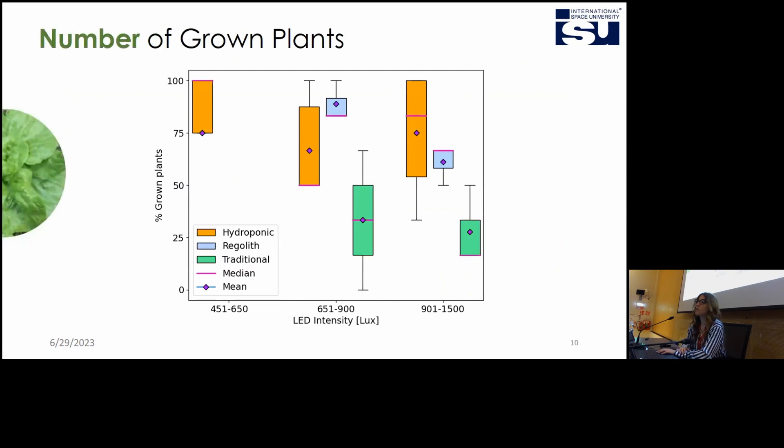But now if we want to compare the three different systems, the hydroponic system in orange, the regolith one in azure and the traditional one in green, I compared the percentage of grown plants with the LED intensity in three different ranges: the low range, medium range and high range.